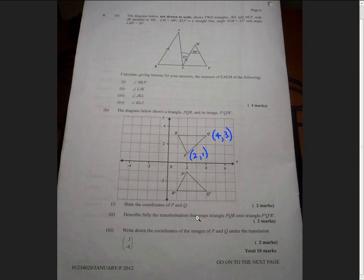Describe fully the transformation that maps triangle PQR onto triangle P'Q'R'. Well firstly, we see that PQR and P'Q'R' are congruent triangles. The distance of P to the x-axis is 1, and the distance of P' to the x-axis is also 1.